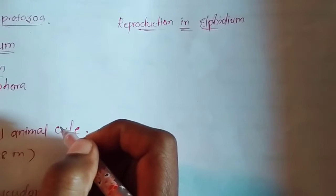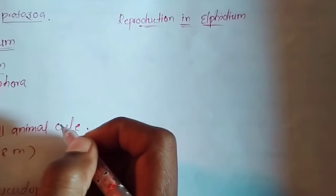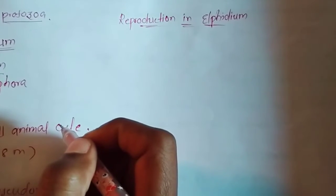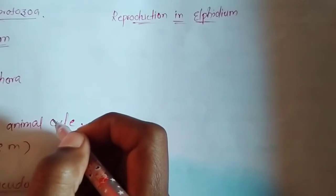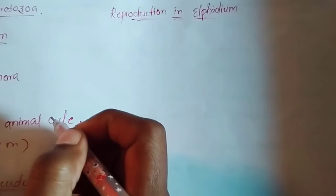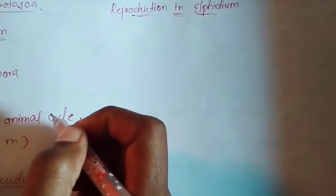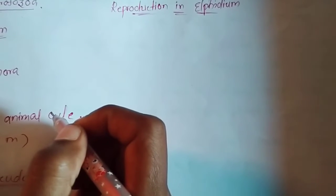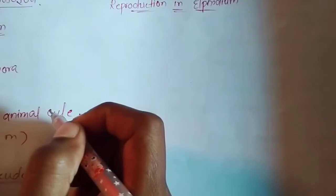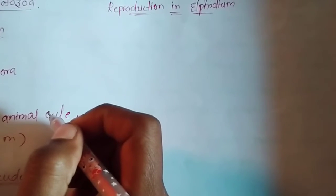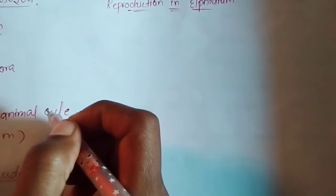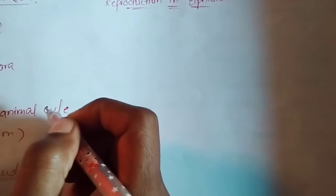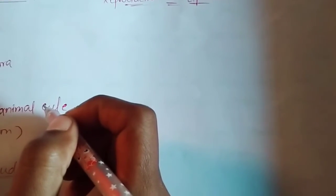Regarding reproduction in Elphidium, Elphidium exists in two different forms: the megalospheric form and the microspheric form. The megalospheric form undergoes sexual reproduction, whereas the microspheric form undergoes asexual reproduction.